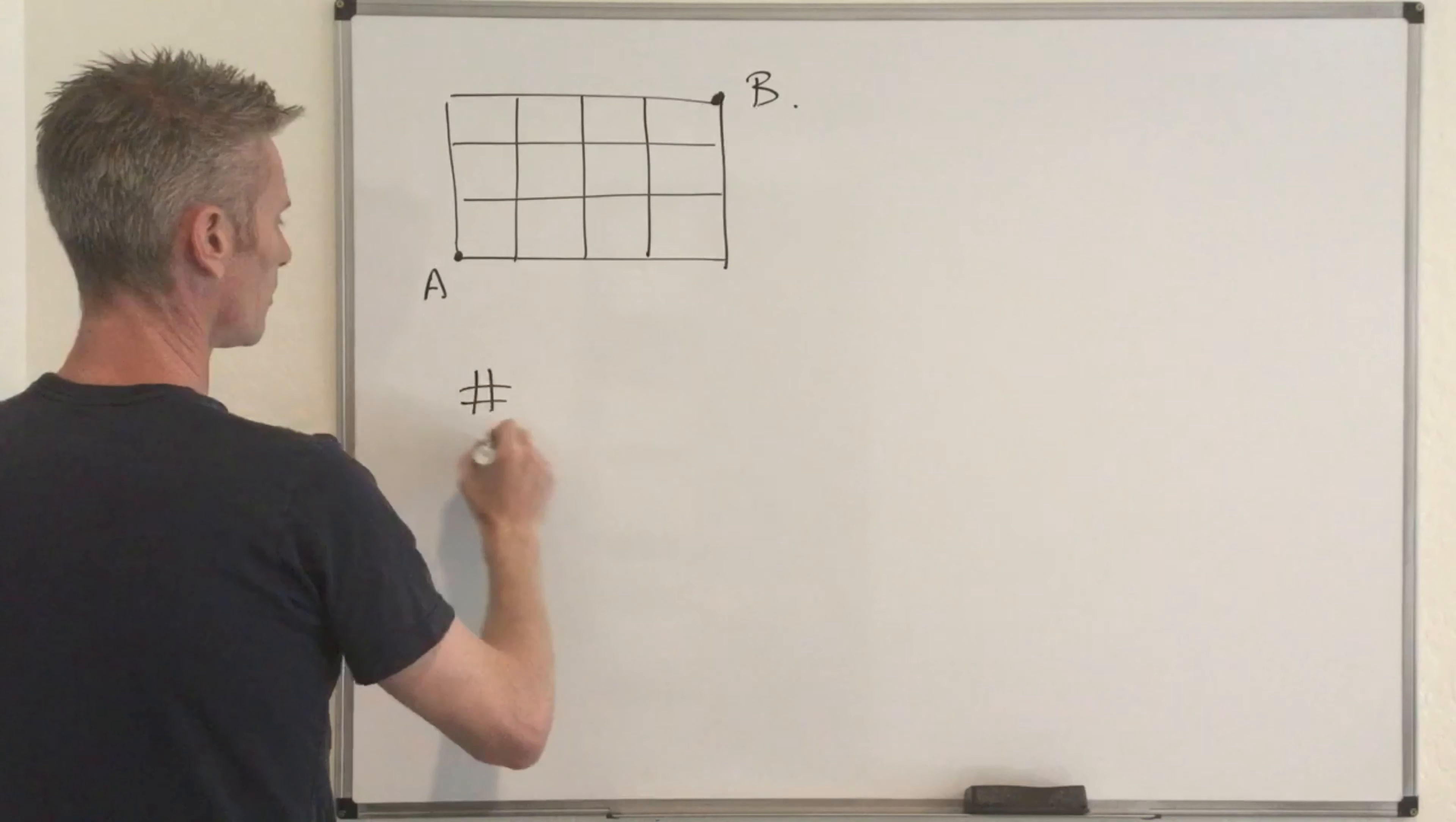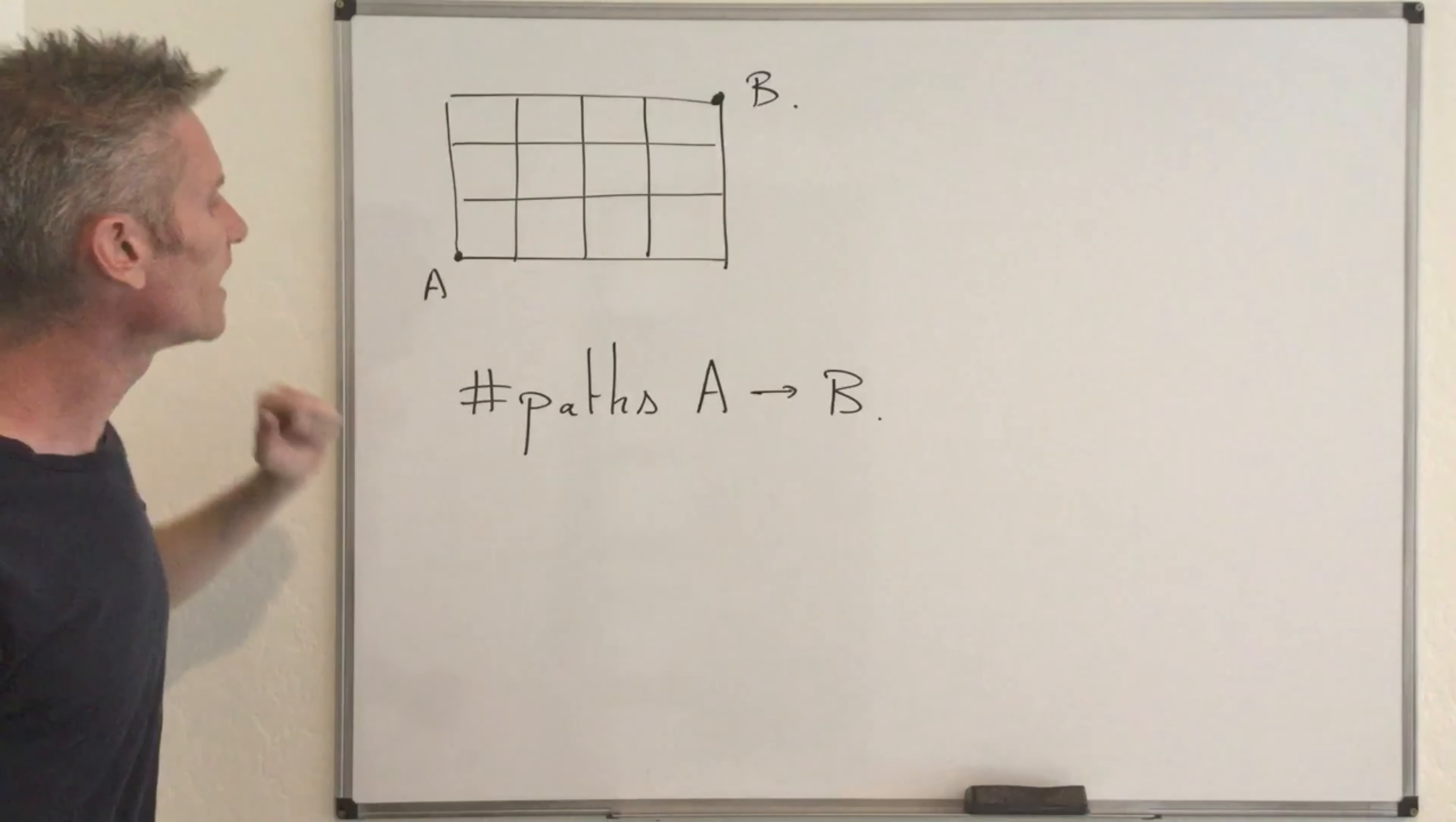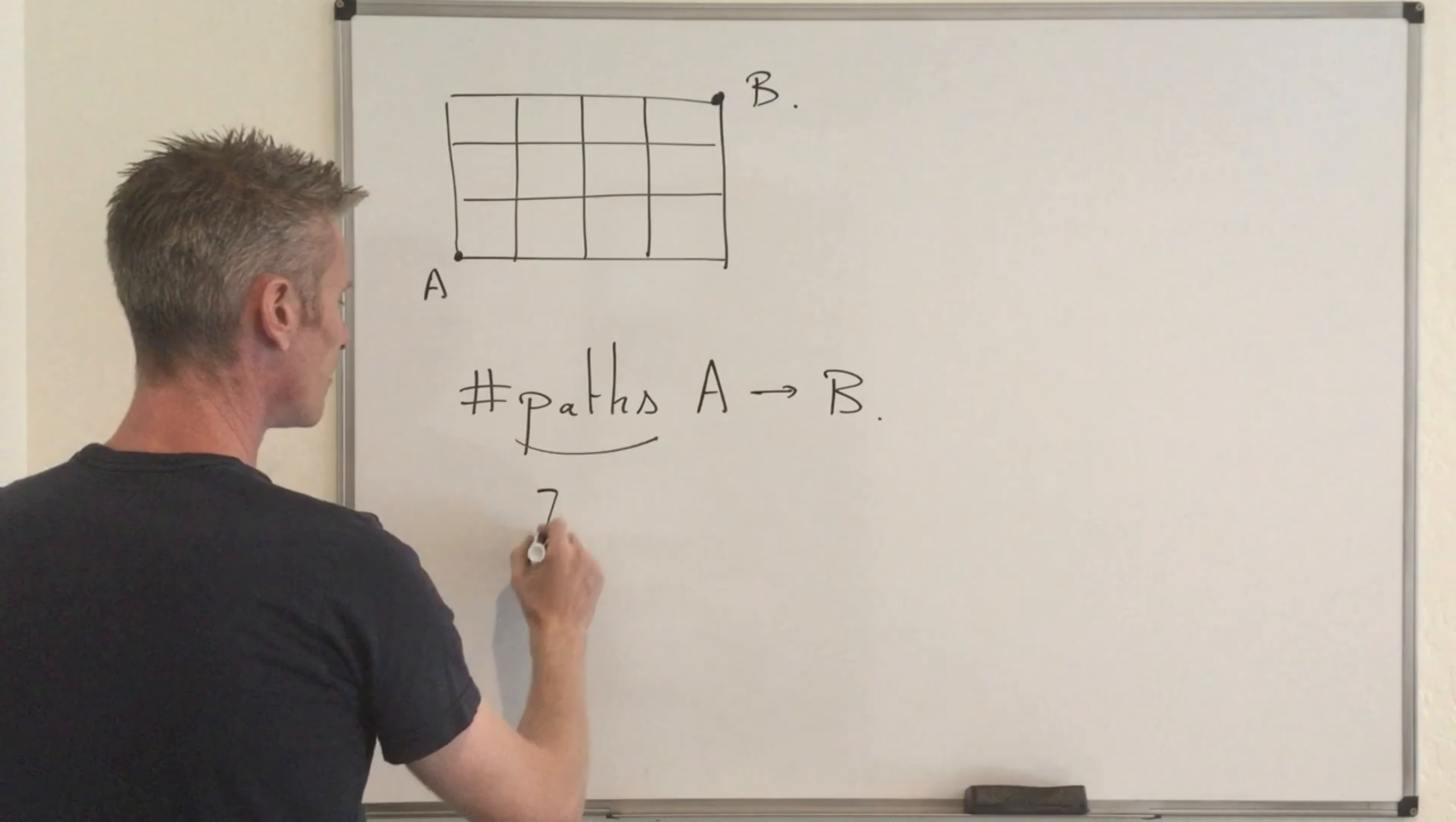So number of paths going from A to B. In this case, we assume that we can only move right or up. So the idea is to observe that to go from A to B going only right or up, you need to move one, two, three, four, five, six, seven times. So the idea is really to think of all the possible paths going from A to B as a sequence of seven moves.